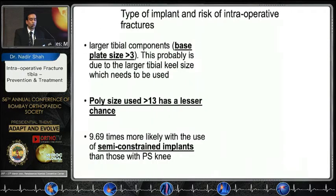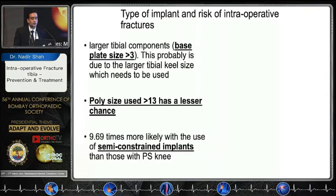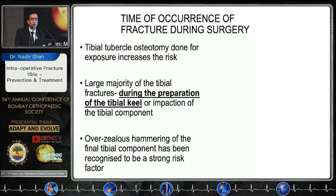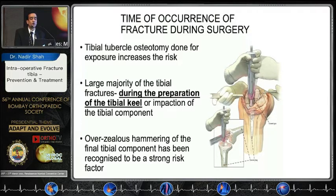Type 4 is limited to the tibial tubercle, which is the most dangerous type. Larger tibial component base plates greater than size 3 carry higher fracture risk, likely due to larger tibial knee sizes. A poly size greater than 13 has a lesser chance of fracture. Fractures are 9.6 times more likely with semi-constrained implants than with PS knees. Tibial tubercle osteotomy performed for exposure increases the risk, and the large majority of tibial fractures occur during tibial preparation, canal reaming, or impaction of the tibial component.